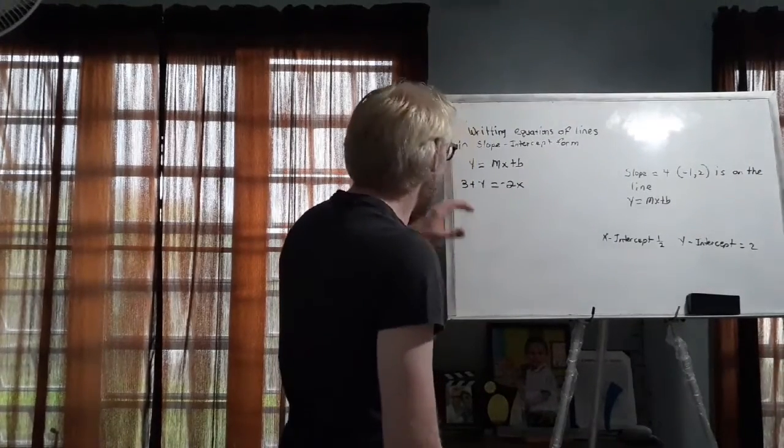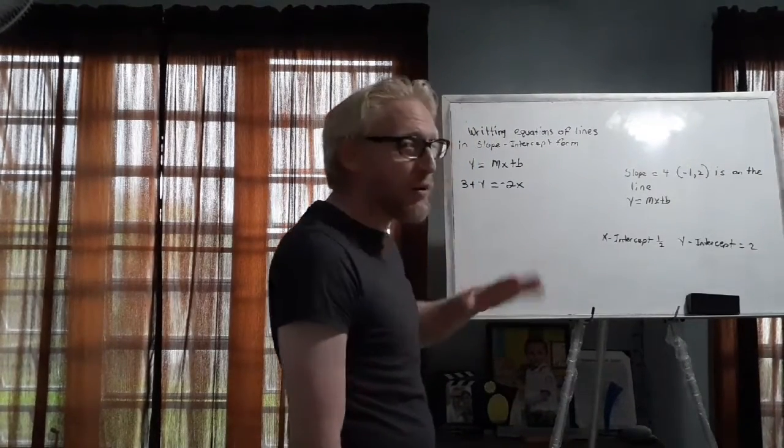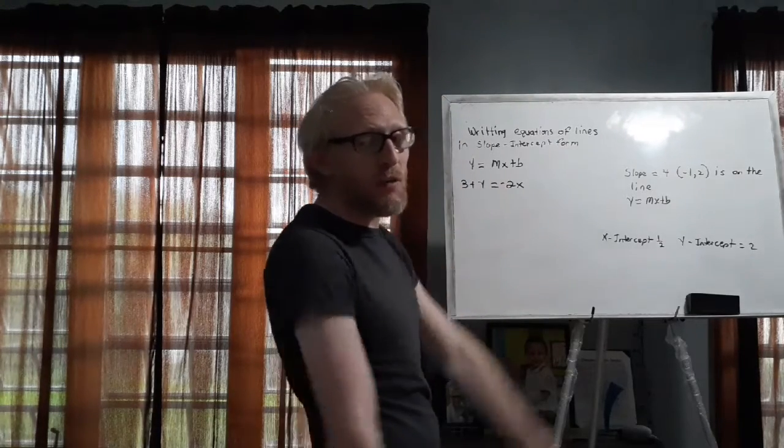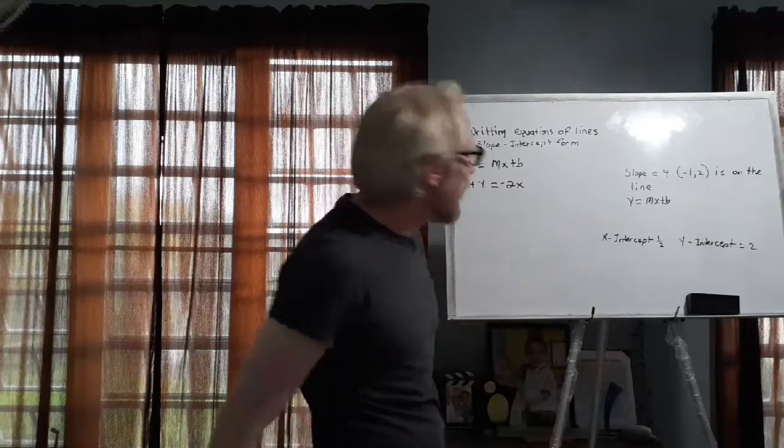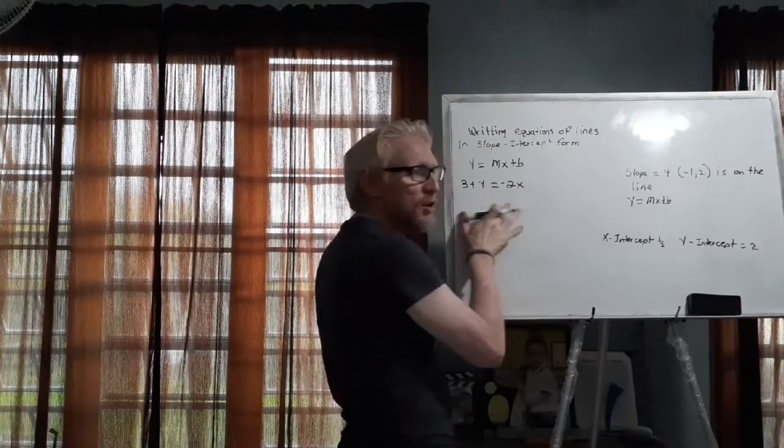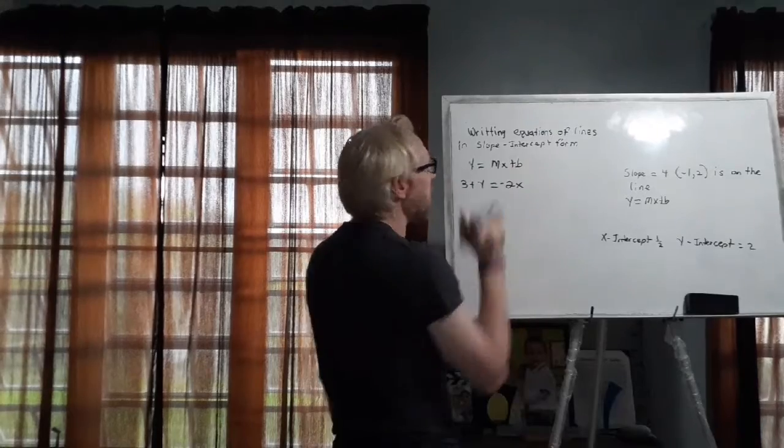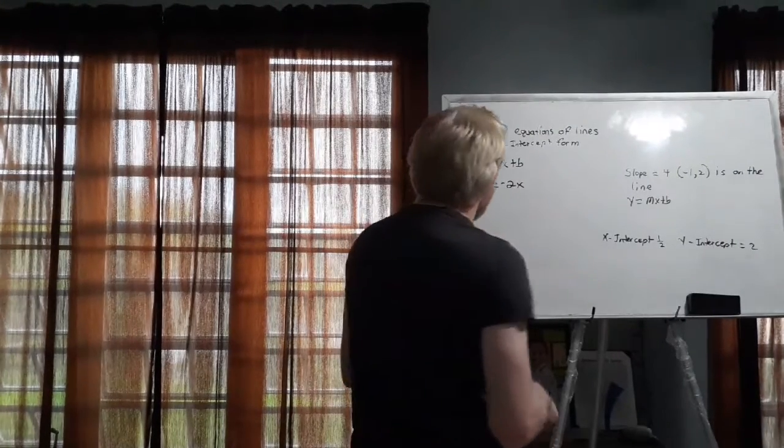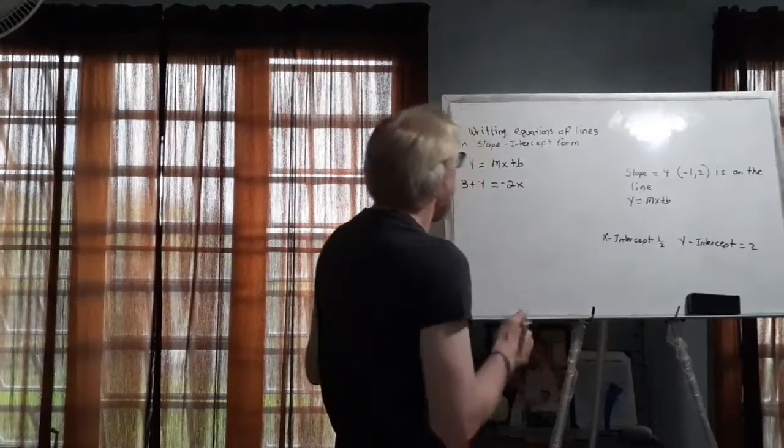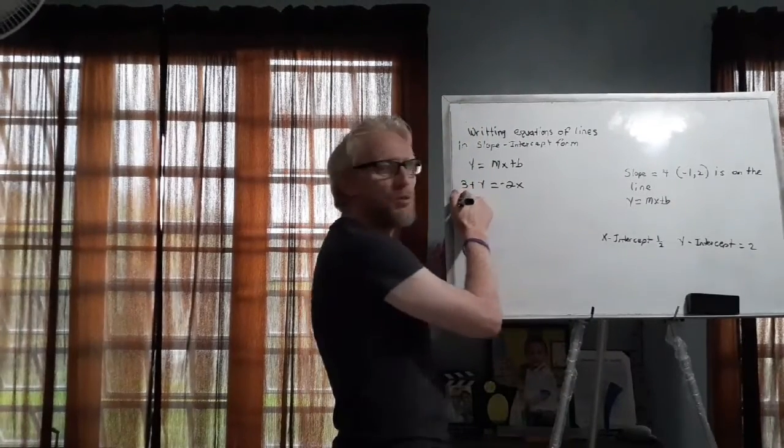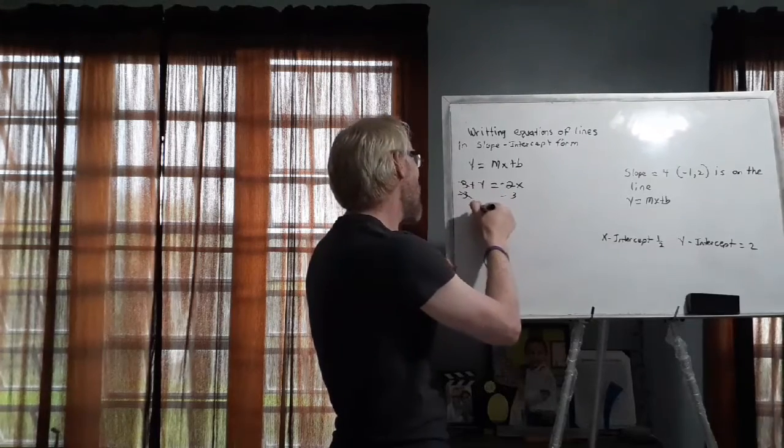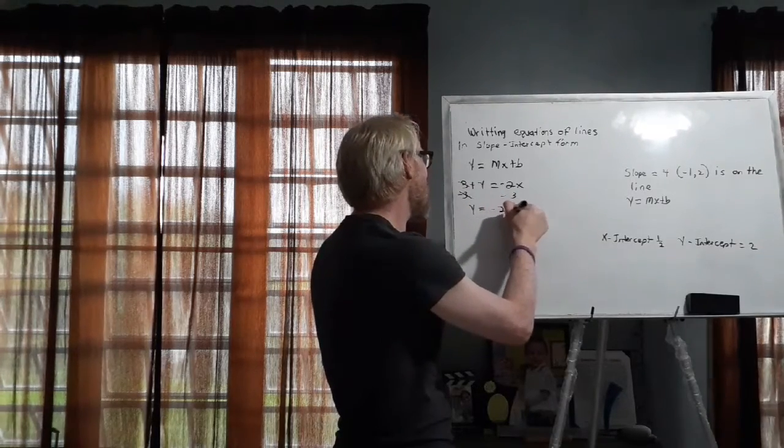Now I have 3 plus y equals negative 2x. All I want to do for now is just simply write them in slope-intercept form, identify who is my slope and who is my y-intercept, simple as that. So here we want to make this equation look like this. So what we are going to do is we are simply going to solve for y. And we already saw the previous video how to solve for y. Now all we have to do in this case is if this is positive, just subtract 3. This is going to cancel out. y equals negative 2x minus 3.